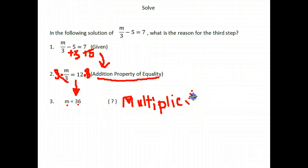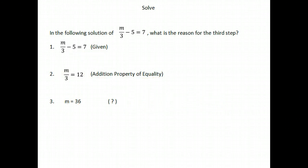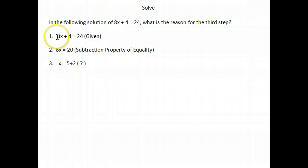Whatever you're doing to solve, that's your justification — there is a rule or law that allows you to do that. Let's take a look at the next one: in the following solution for 8x plus 4 equals 24, what is our reason for the third step? Our first step is that 8x plus 4 equals 24. How did we know that? We were given that — that's our reason.